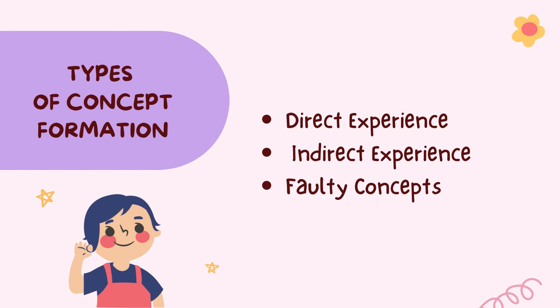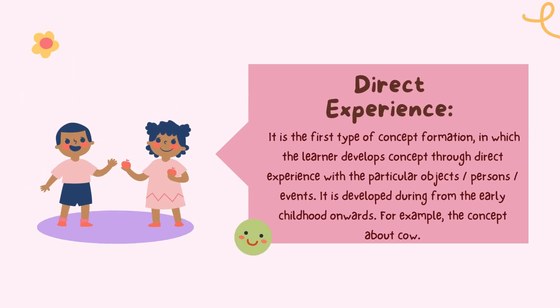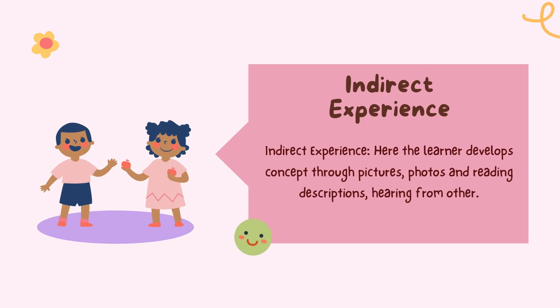There are types of concept formation. First is direct experience — the learner develops concepts through direct experience with particular objects, persons, and events. It is developed from early childhood onwards. For example, the concept about a cow. Next is indirect experience — here the learner develops concepts through pictures, photos, reading descriptions, and hearing from others.